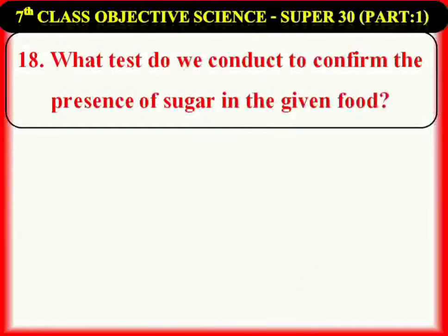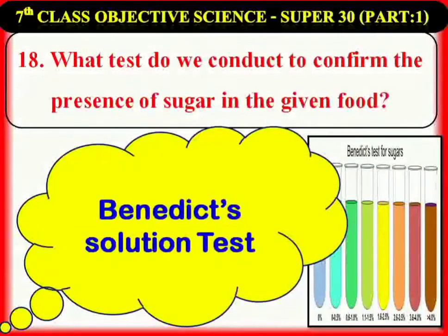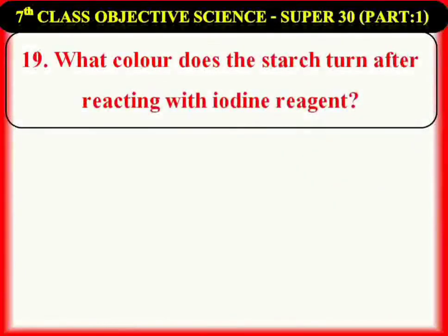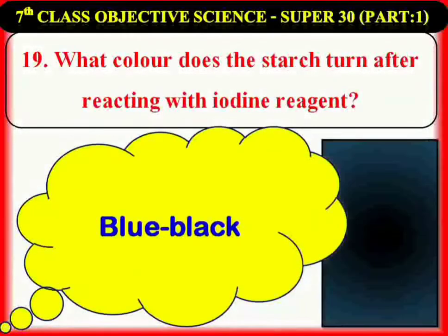What test do we conduct to confirm the presence of sugar in the given food? Benedict's solution test. As this test was developed by American chemist Stanley Roseter Benedict, it got this name. What color does starch turn after reacting with iodine reagent? Blue-black.